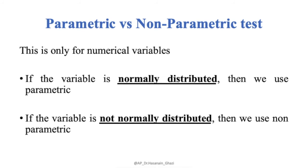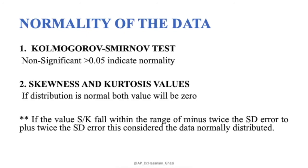Another important consideration is whether to use a parametric or non-parametric test. This applies only to numerical, continuous variables. If the variable is normally distributed, we use a parametric test. If the variable is not normally distributed, we use the non-parametric test. But how do we test the normality of data?